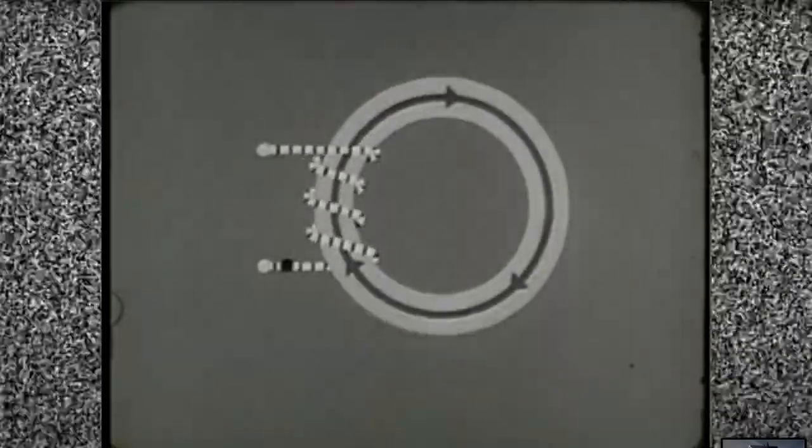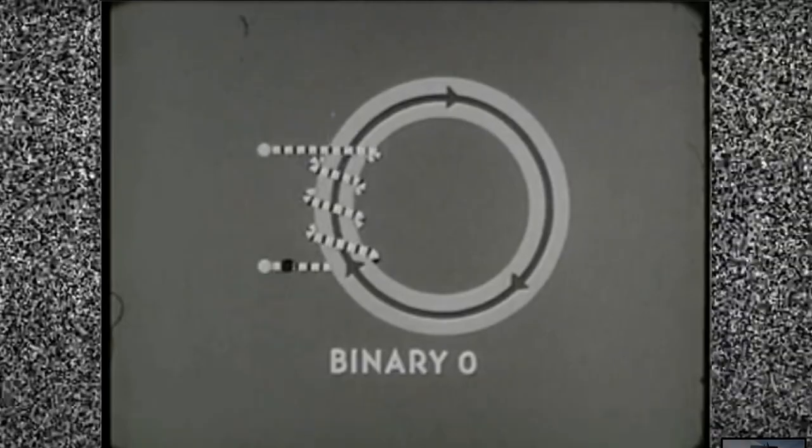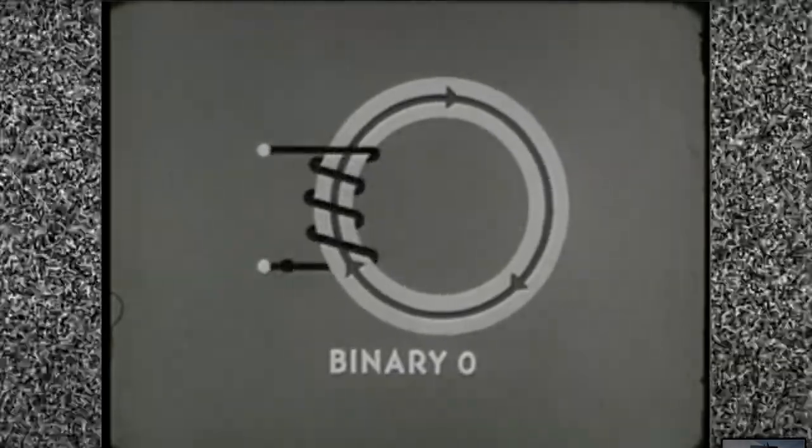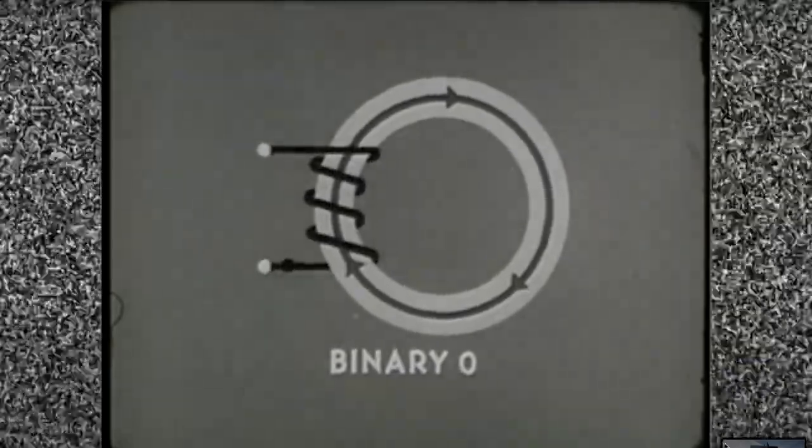Therefore, when dot current is fed into the core, magnetism builds up and the core is set to binary zero. Residual property keeps it there.